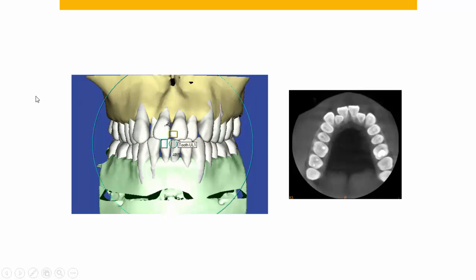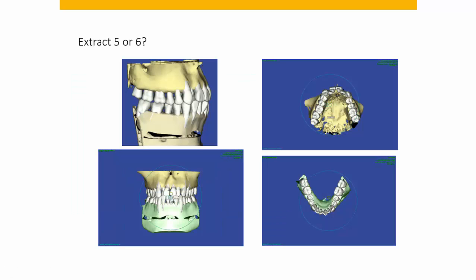You can see that he already has some dehiscence associated with the anterior teeth. The question here is: you want to correct the class two on the right-hand side and make room for the upper lateral incisors to fit in the arch. Do you extract the upper right first bicuspid, or do you extract the upper right cuspid?